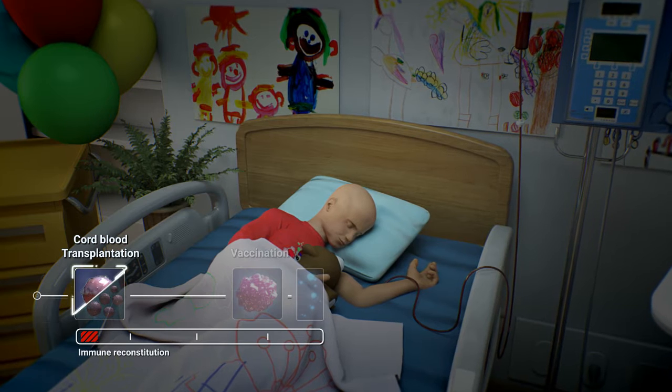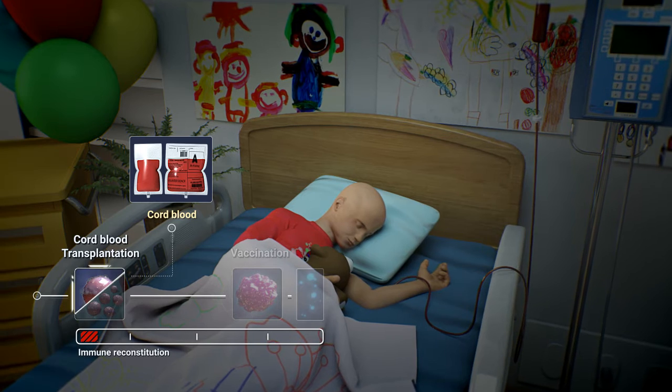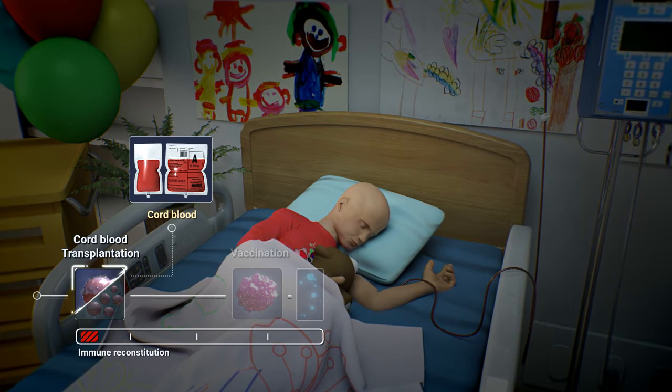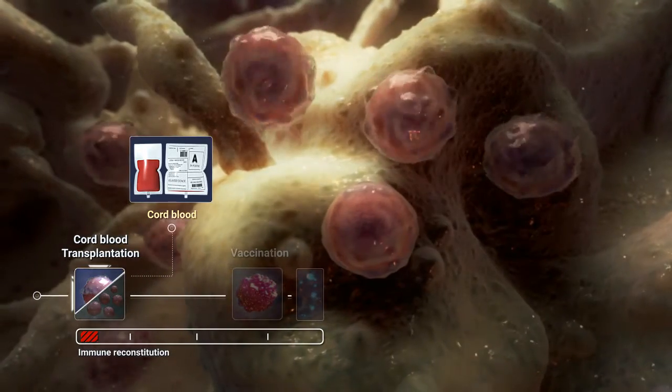Donor umbilical cord blood, harvested from the placenta after delivery, forms the basis of this new therapy. 80 percent of the cord blood unit will be transplanted in the patient after the patient's own impaired immune system is depleted by a specific chemotherapy course.